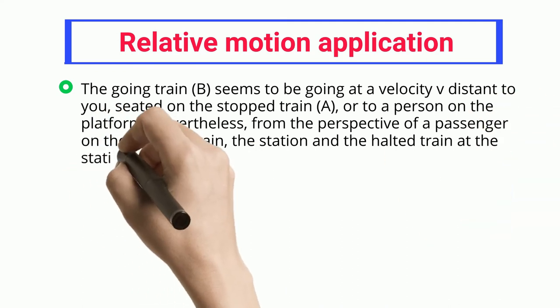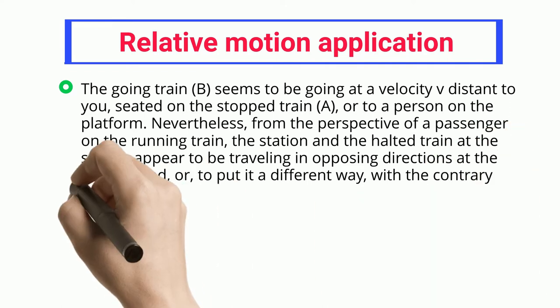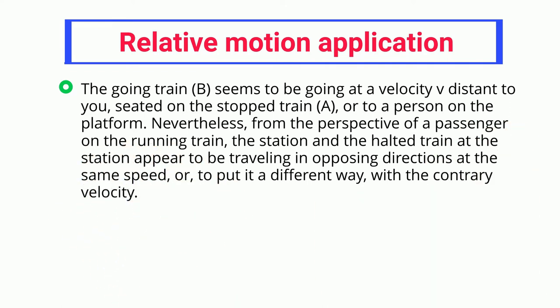Nevertheless, from the perspective of a passenger on the running train, the station and the halted train at the station appear to be traveling in opposing directions at the same speed, or to put it a different way, with the contrary velocity.